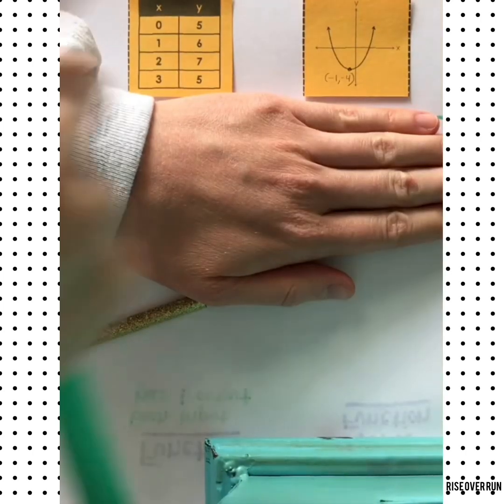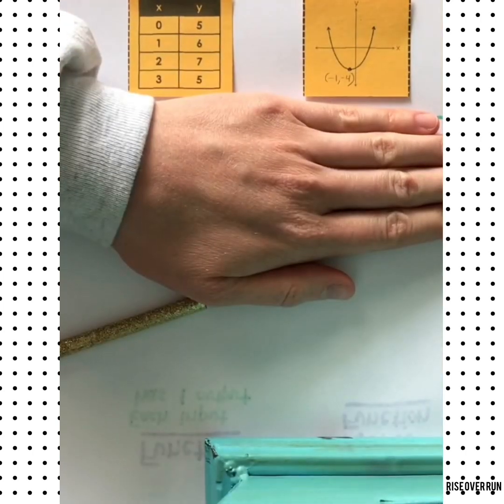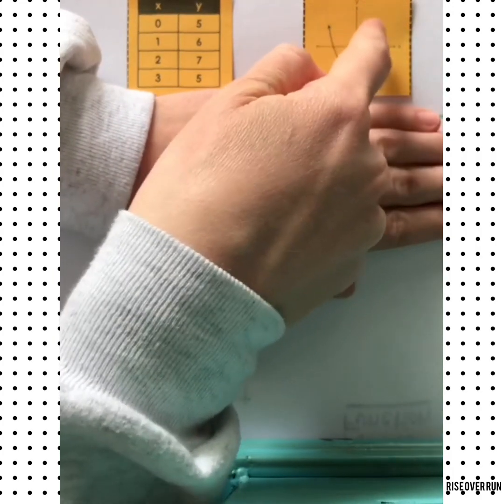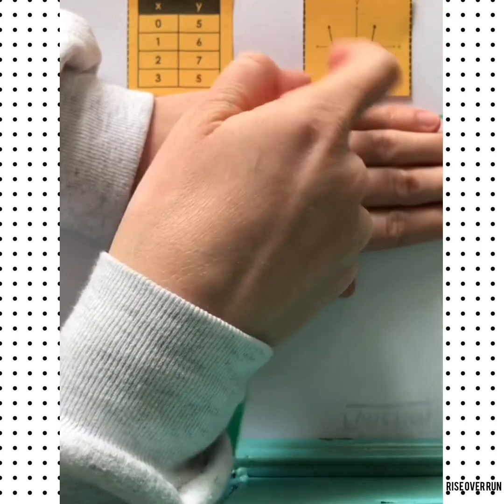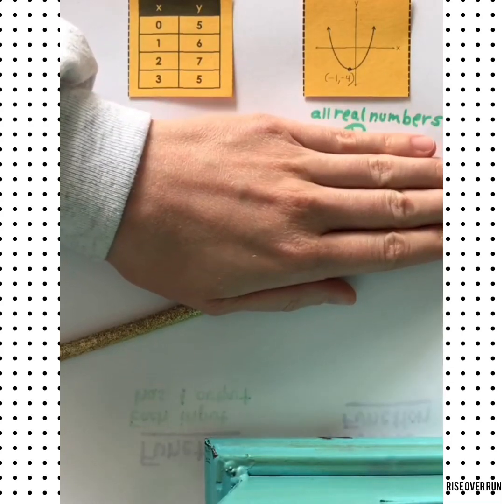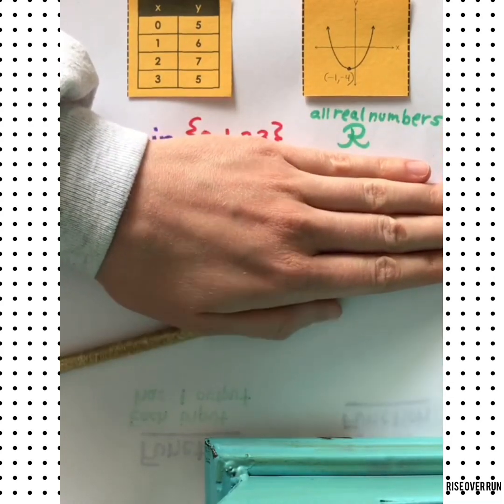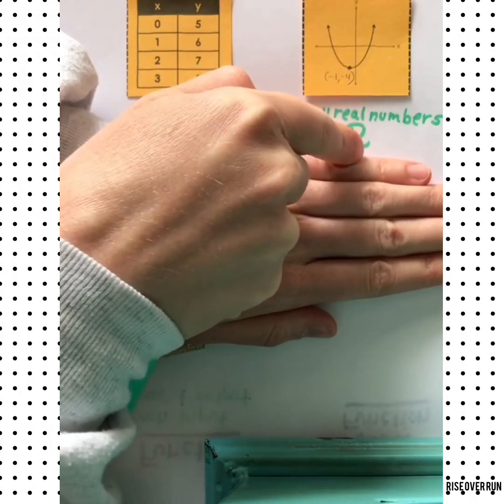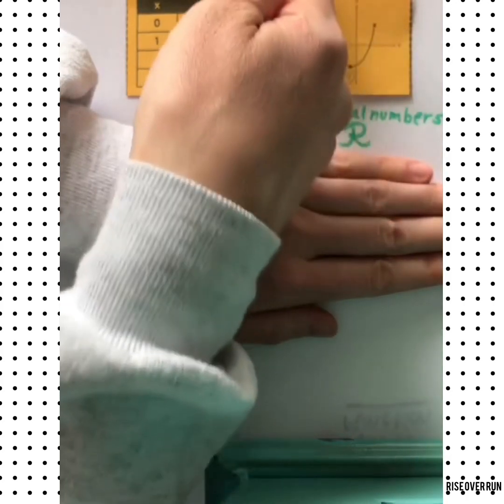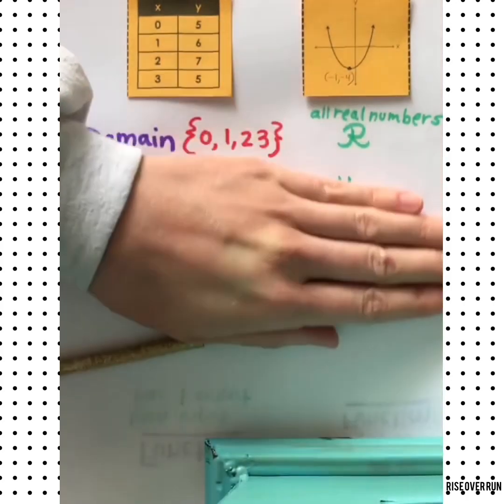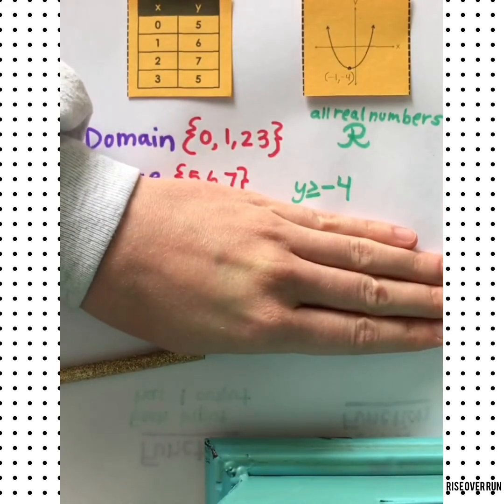Let's write the domain and range for this parabola. The domain means all the possible inputs, all the x values. Because these arrows are going to keep going in both directions, all x values are in this function. So we want to say all real numbers or you might see a fancy r. For the range, we're looking for all the possible outputs or y values. So they're going to keep increasing here, but the lowest y value will be negative four. So we can say y is greater than or equal to negative four.